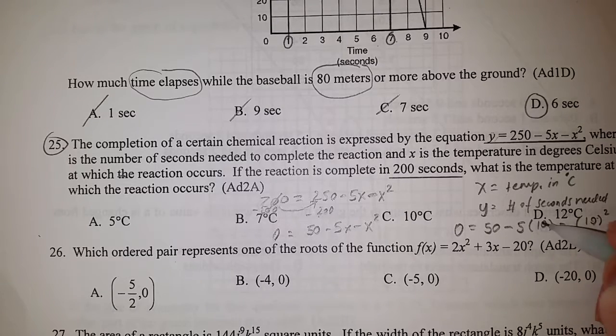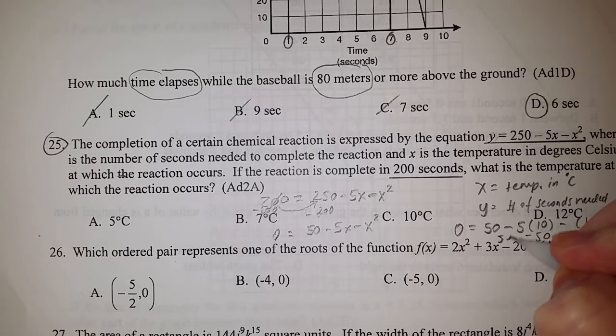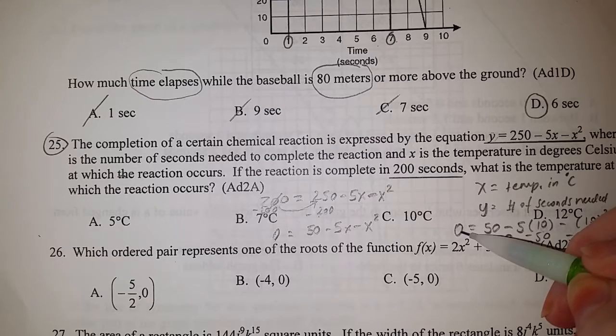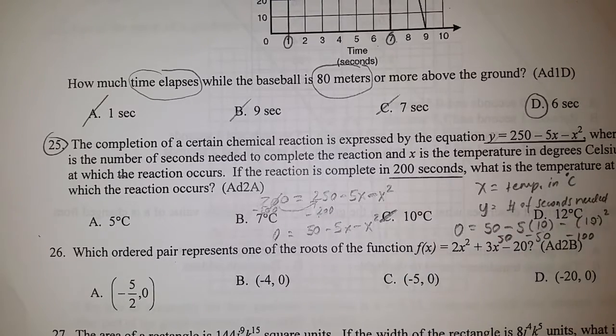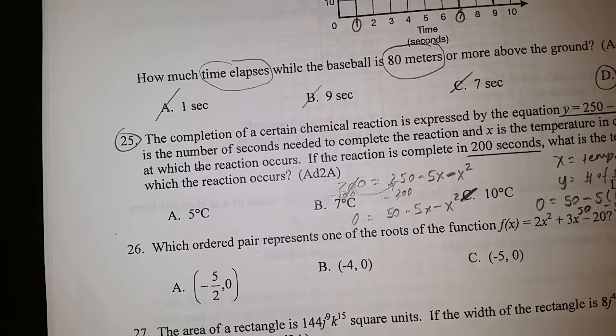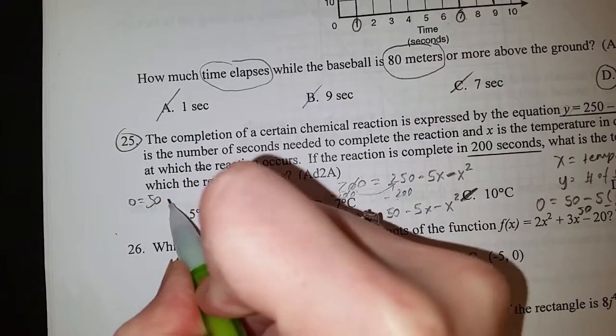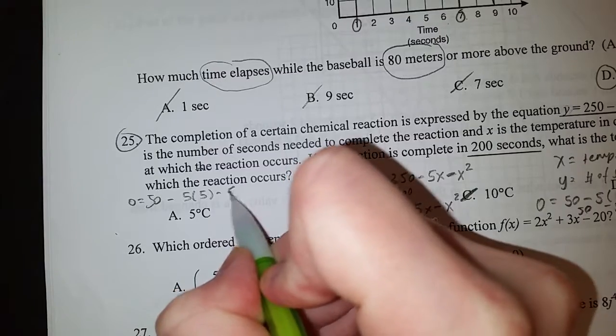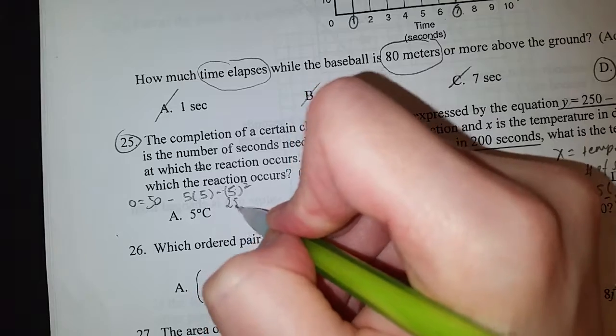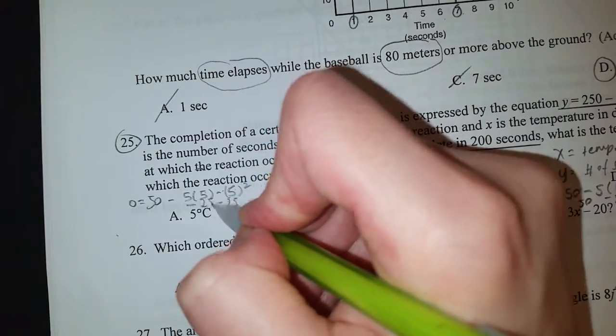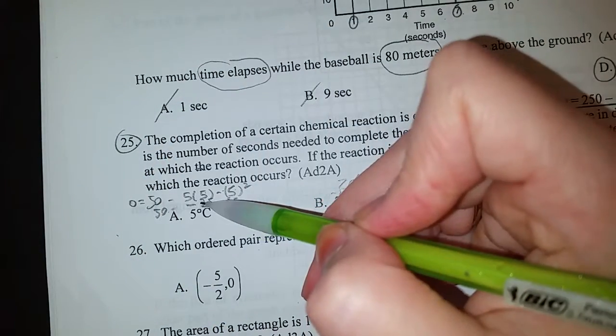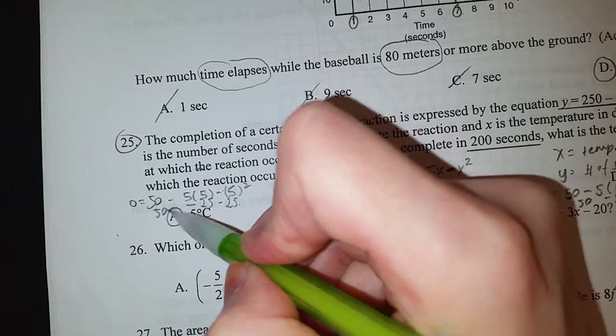50 - 50 is 0 - 100 is -100, but that's not equal to 0, so C is not my answer. Let's try A. I'm plugging this in again. 5 times 5 is 25, and we have 50. So 50 - 25 is 25 - 25 is 0, so it looks like it could be A.